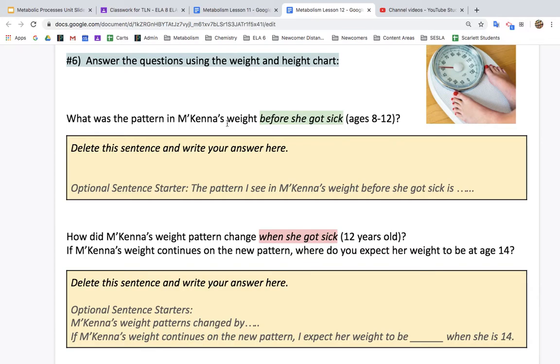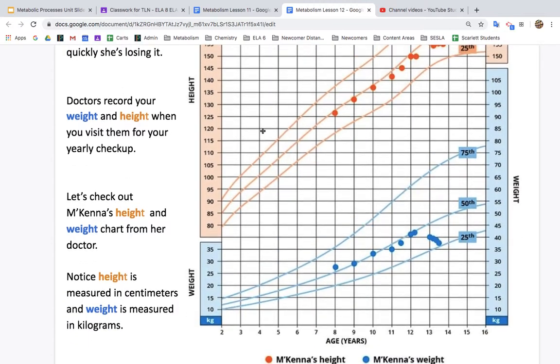What was the pattern in McKenna's weight before she got sick? Ages 8 through 12. So we're looking at her weight before age 12, before she got sick.